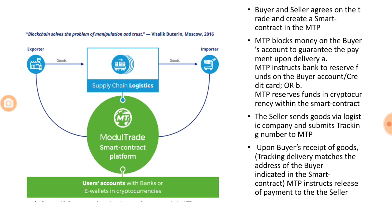Here's how the ModulTrade ecosystem works: the buyer and seller agree on a trade and create a smart contract on the ModulTrade smart contract platform. The MTP blocks money on the buyer's account to guarantee payment upon delivery. MTP then either instructs a bank to reserve funds on the buyer's account or credit card, or reserves cryptocurrency within the smart contract. So ModulTrade provides two options — it can work with the current fiat currency or with cryptocurrency. When payments are made through cryptocurrency, there is no involvement of a bank and therefore the cost of execution will be very low.